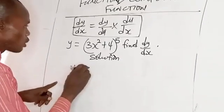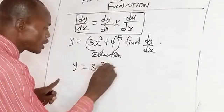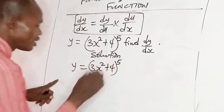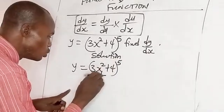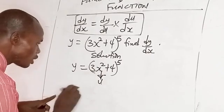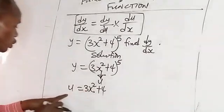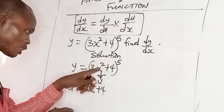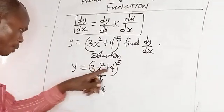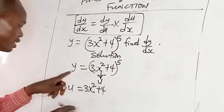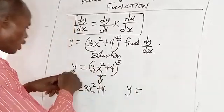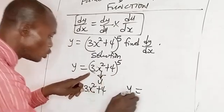We are given y equals (3x² + 4)⁵. So let this be u. If u equals 3x² + 4, remember it's only u we introduce here. This function equal to u, 3x² + 4. Then y will be equal to u⁵.